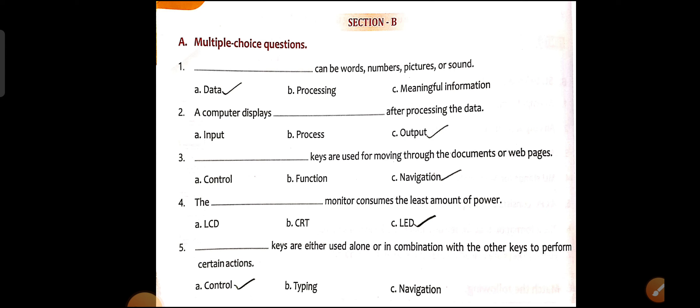Next: Blank keys are used for moving through documents or web pages — the answer is Navigation keys. Next: The blank monitor consumes the least amount of power. There are three types of monitors: CRT (Cathode Ray Tube), LCD, and LED. The LED monitor consumes the least power — so the correct answer is LED.